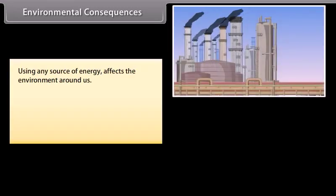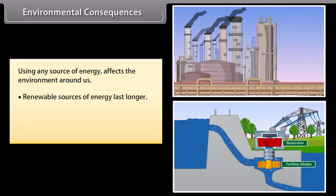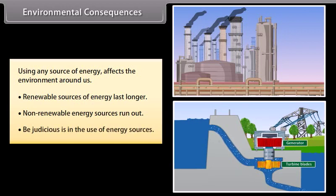Environmental consequences. Using any source of energy affects the environment around us. Therefore, before exploiting any energy source, ensure that it does not disturb the environmental balance and is harnessed judicially. Renewable sources of energy last for as long as they keep generating, whereas non-renewable energy runs out. We have to be judicious in our selection of energy, considering the purpose of the energy being used and its actual usage.